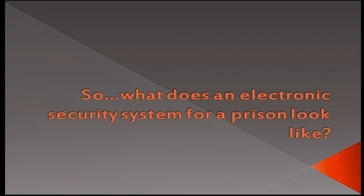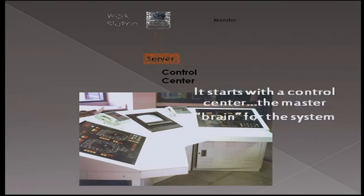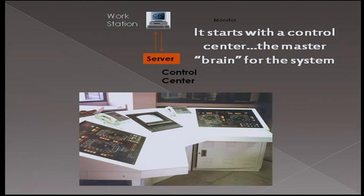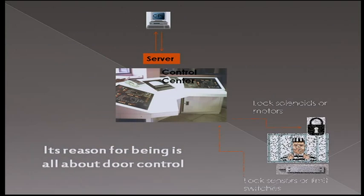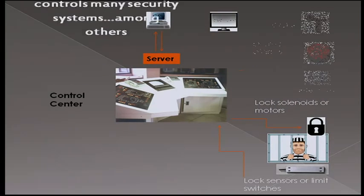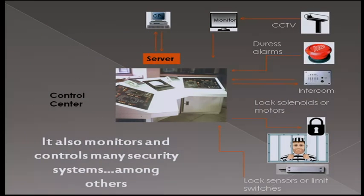What does an electronic security system for a prison look like? It has a control center which is the brain for the system — servers are there. It also monitors and controls other things within the prison, like video. If you can get access to the control computer, you can see what's going on with the video as well. Duress alarms can also be included. In our demo, we were able to simulate opening up all the prison doors, while suppressing the alarm suggesting the doors have been opened — so the guard would see the doors are still closed, but actually they're open.